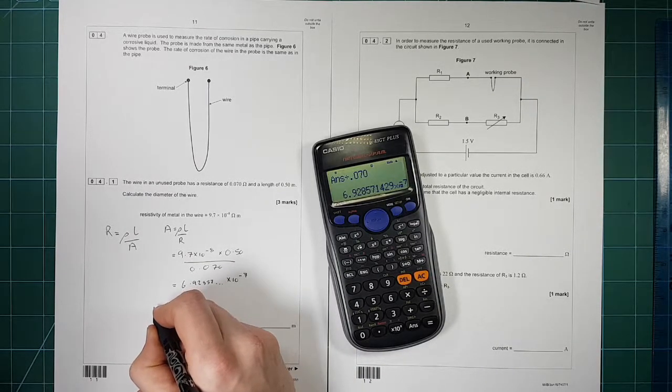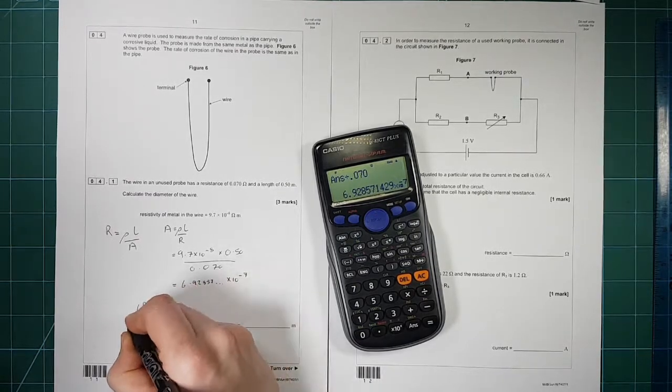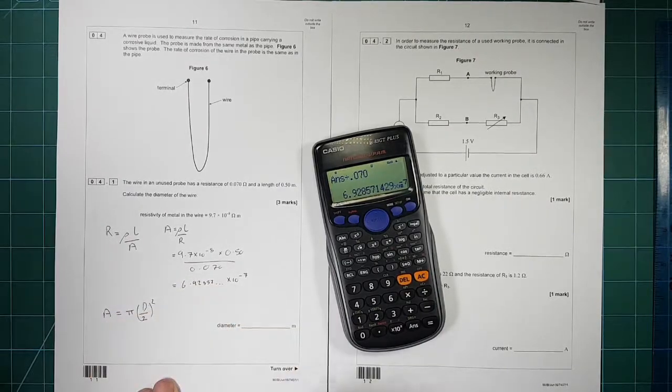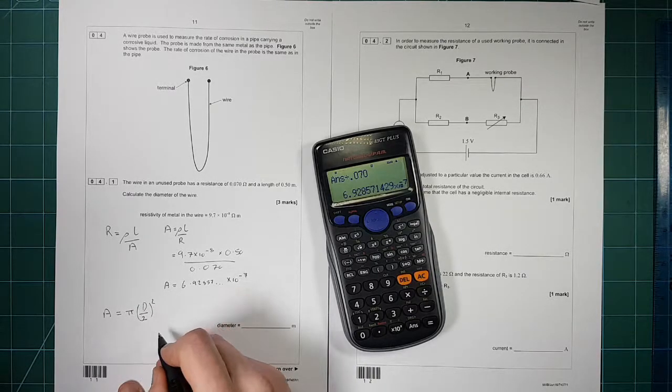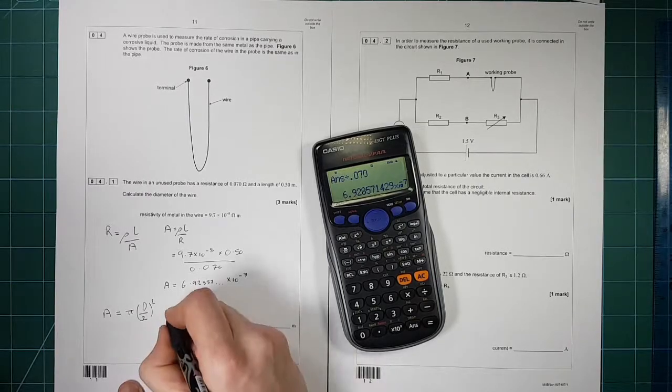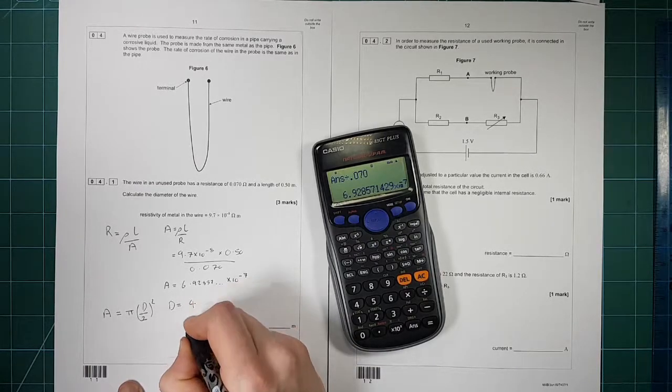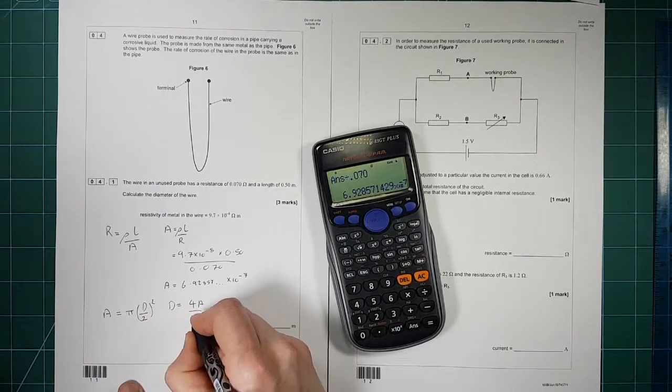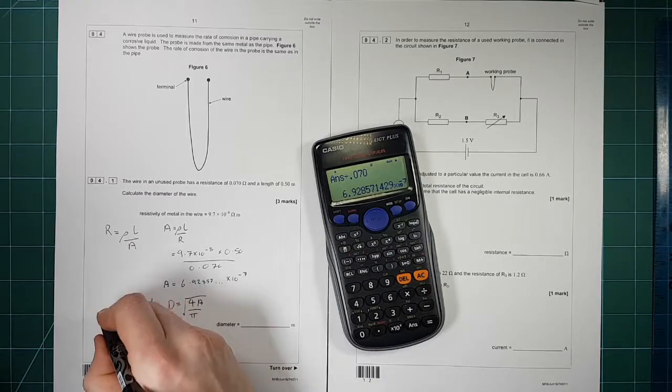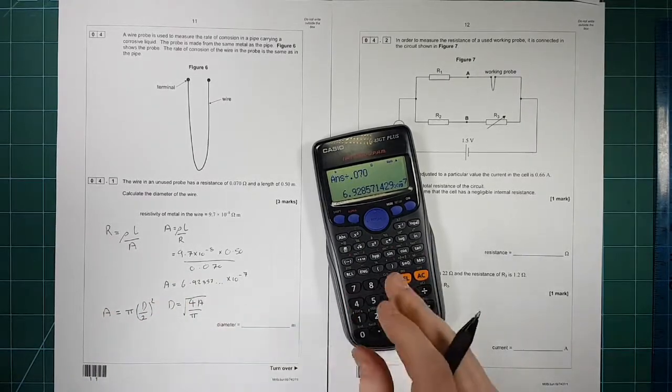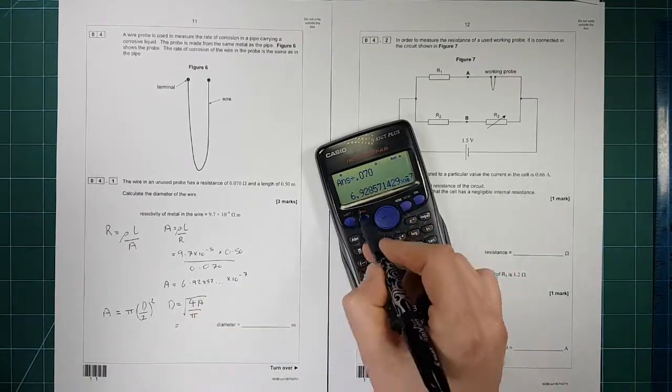We want the diameter. So the diameter divided by 2 squared times by pi is equal to the cross-sectional area. So if we want to rearrange that to get D, we have D is equal to square root of 4A divided by pi. You can do that in multiple steps if you want, and show yourself that that's the correct way.